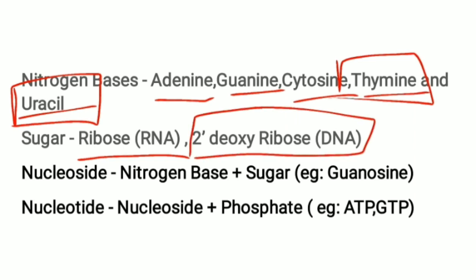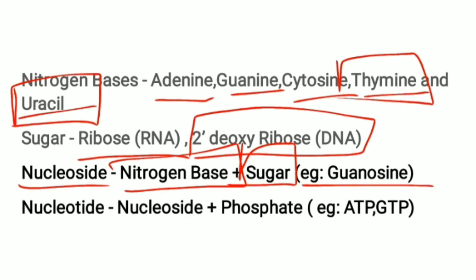A nucleoside is nothing but a nitrogen base plus a sugar. Some examples of nucleosides are guanosine and adenosine. A nucleotide is formed when a nucleoside combines with a phosphate group. Examples of nucleotides are ATP and GTP.